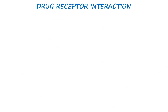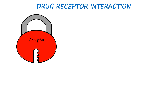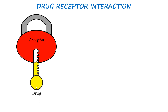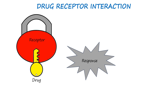Let's start with drug-receptor interaction. When we take a drug, it doesn't just float around aimlessly — it is looking for specific targets in our body called receptors. These receptors are like locks on the surface or inside our cells. The drug acts like a key, and when it finds the right lock it binds to it, causing a response in our body. So drug-receptor interaction is the process by which a drug binds to the receptor, leading to a variety of cellular responses.